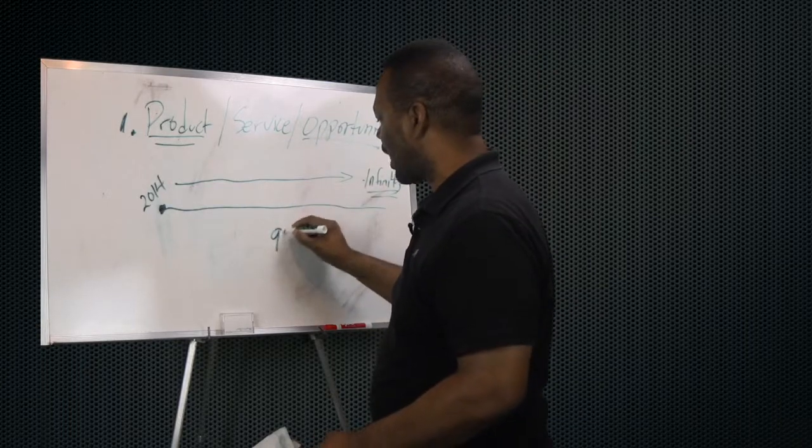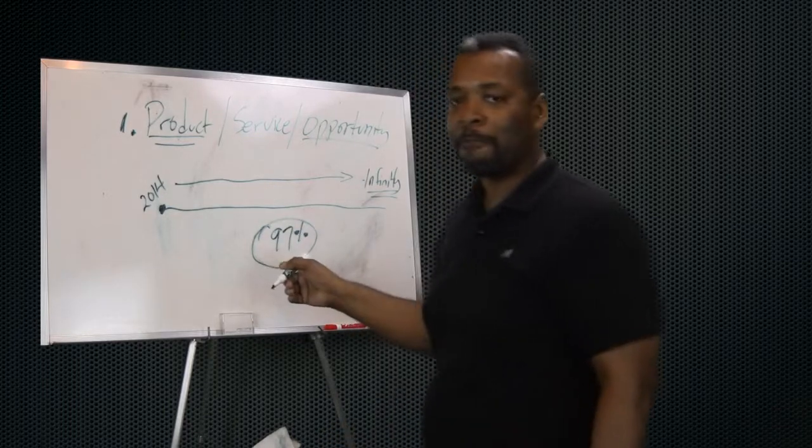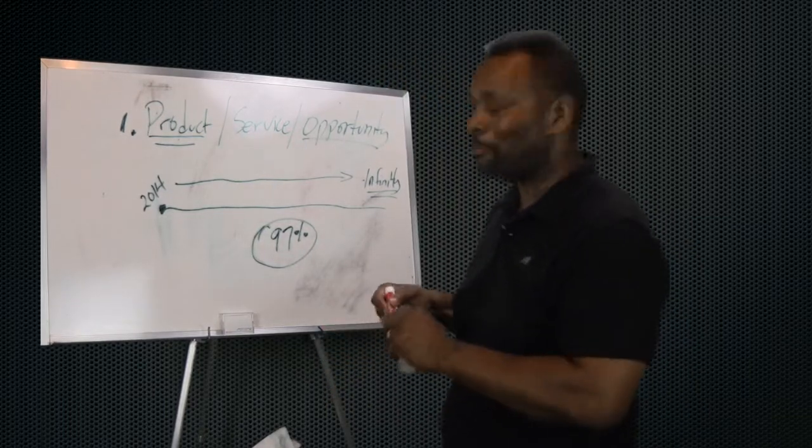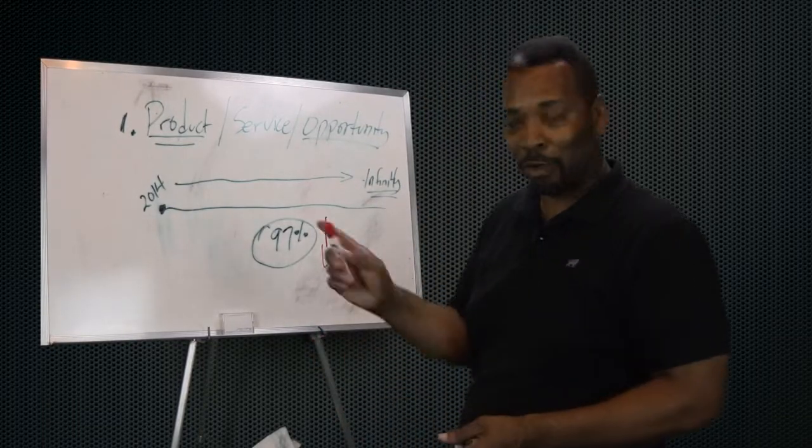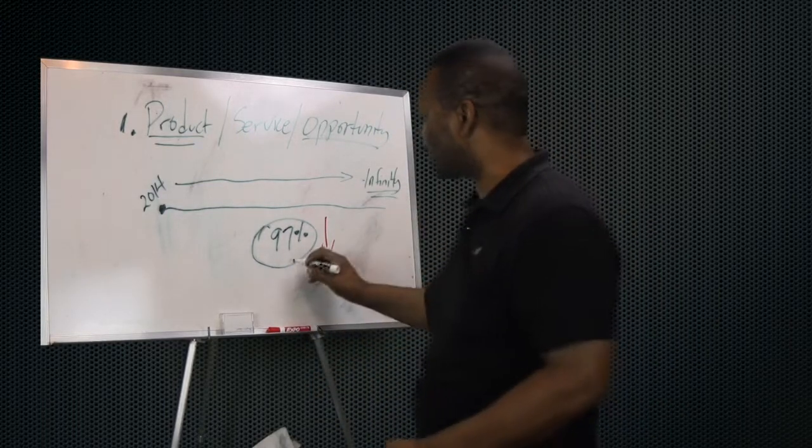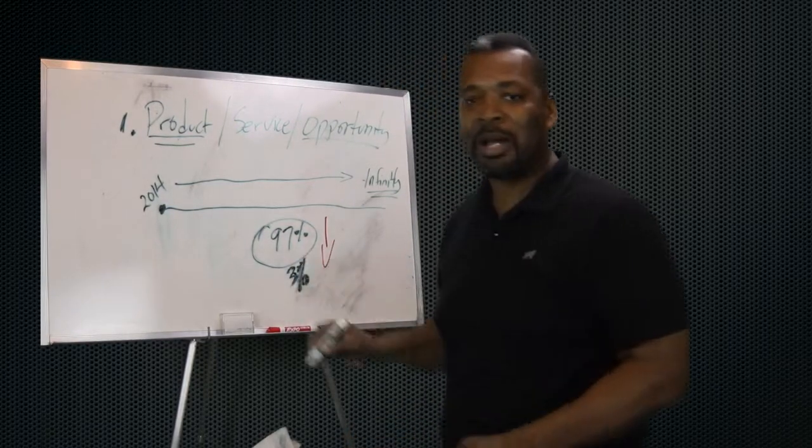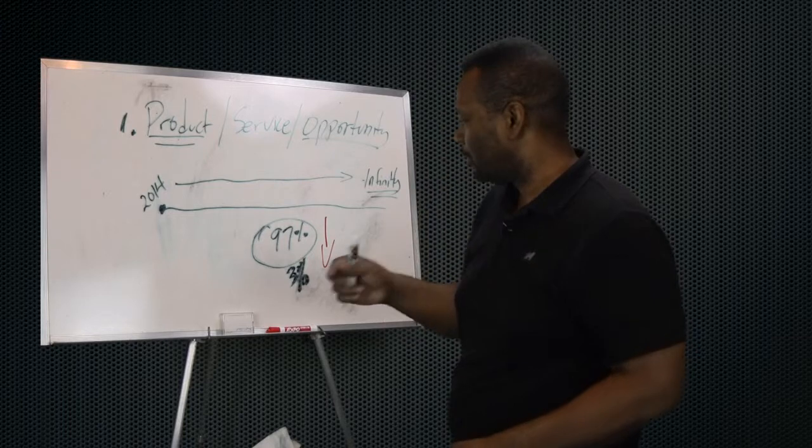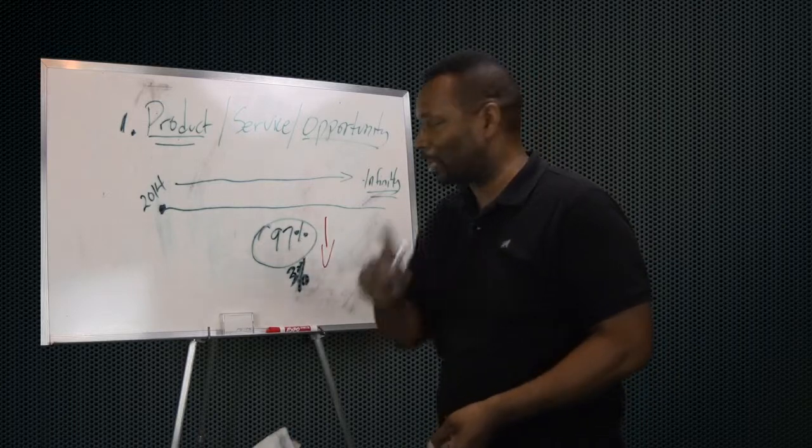There's a stat online that I've heard for a number of years. And it's simply this: 97% of the people online don't make it. In other words, they fail. They don't make any money. So that means that there's about 3% of the people that actually make money. So you got to ask yourself a question: What is it that the 3% are doing that you're not doing?